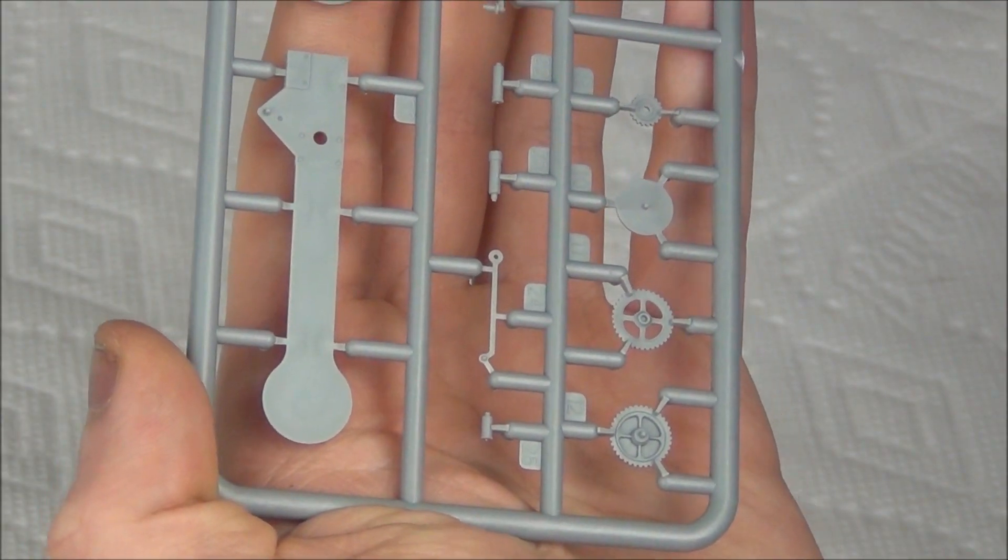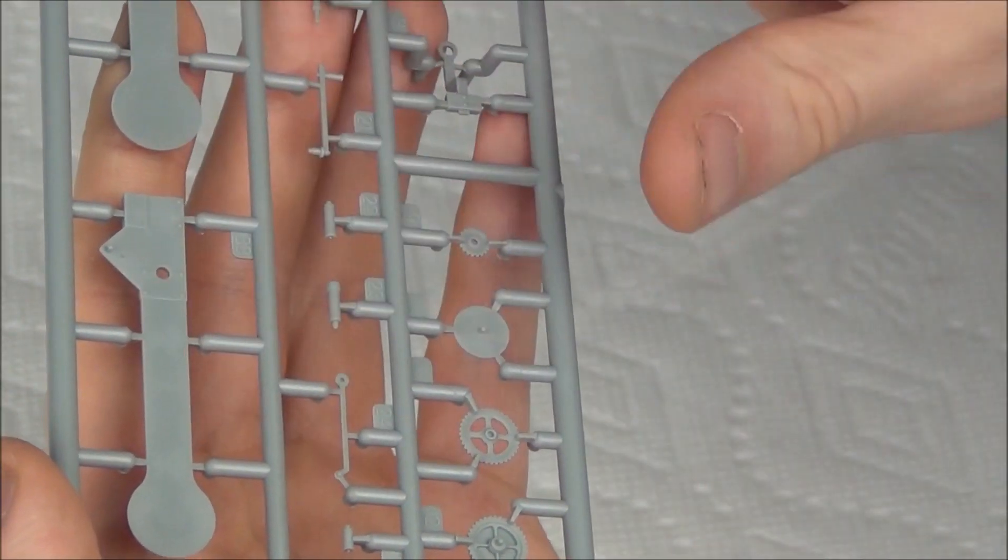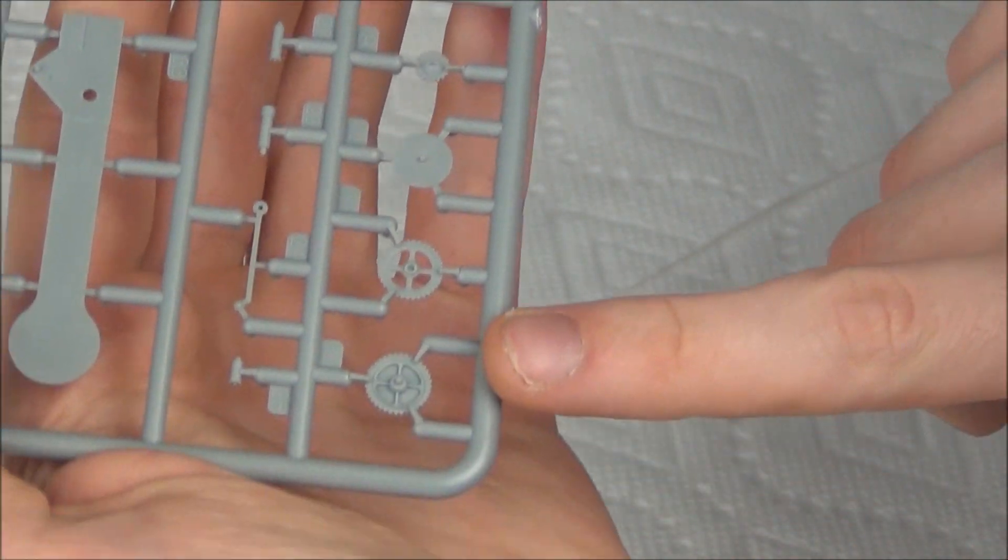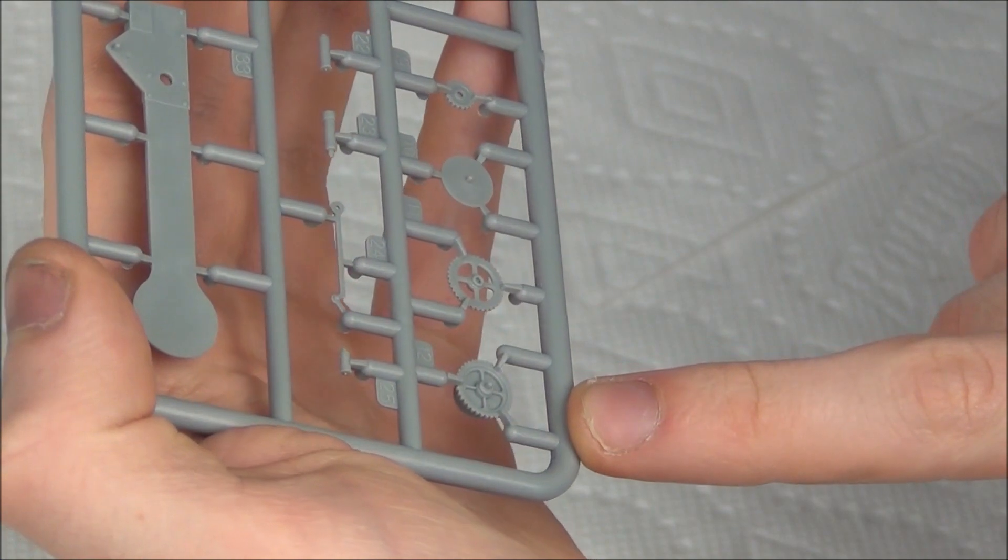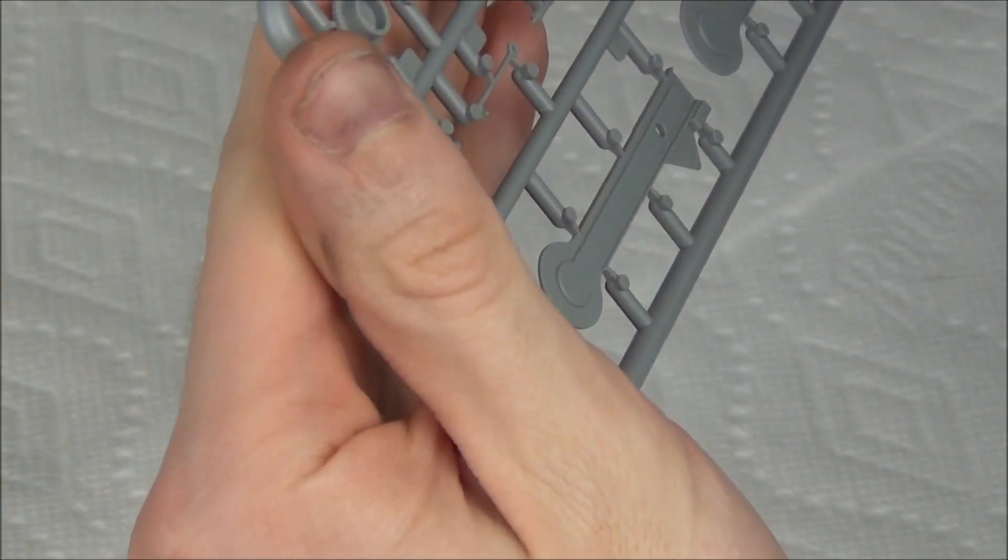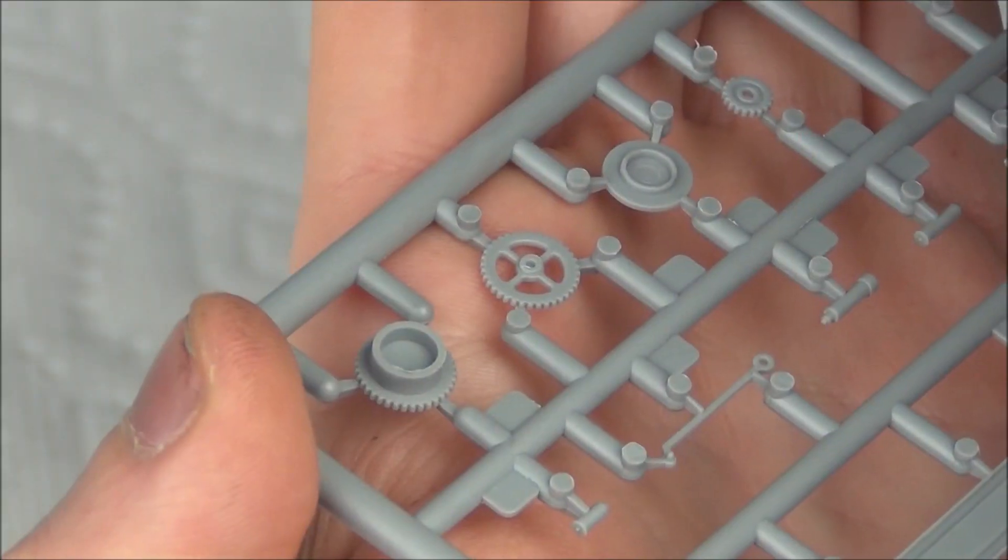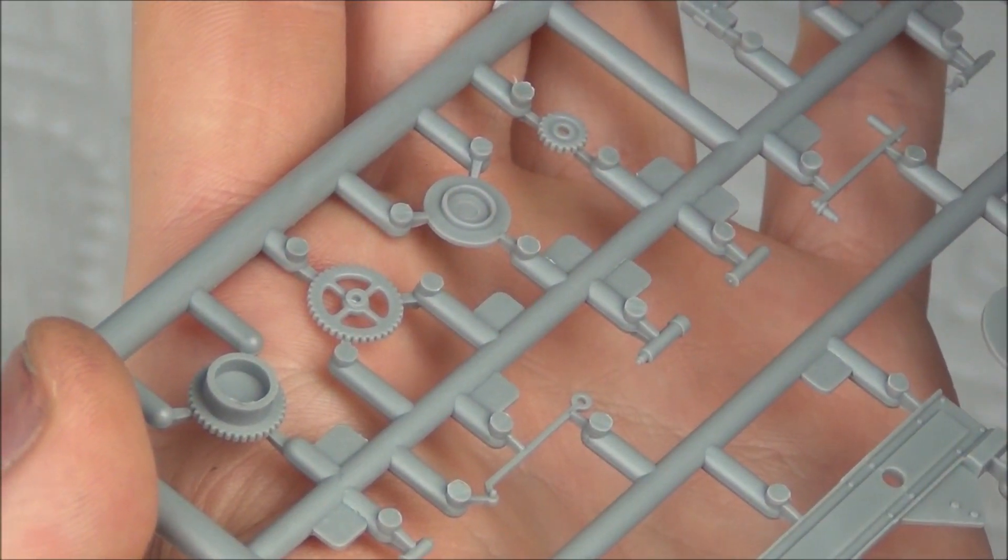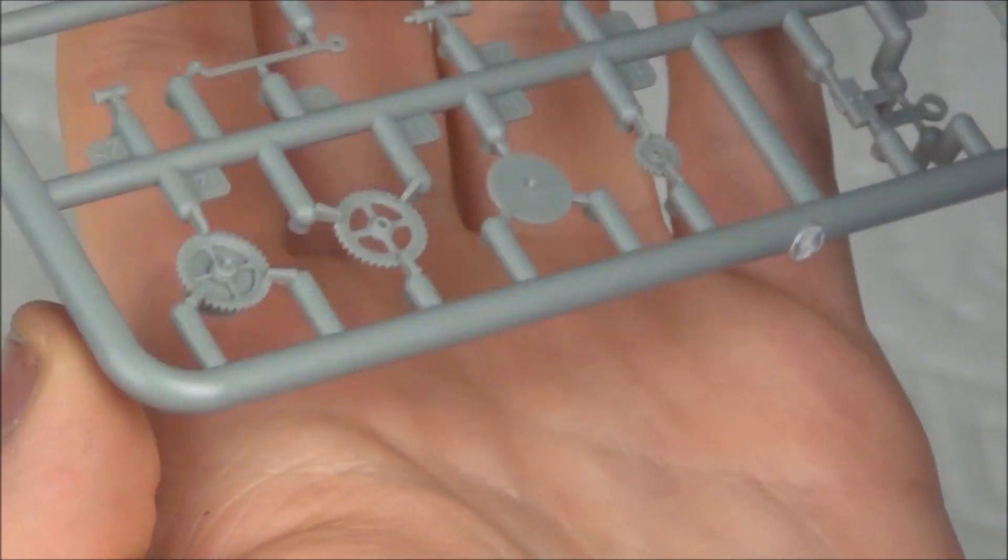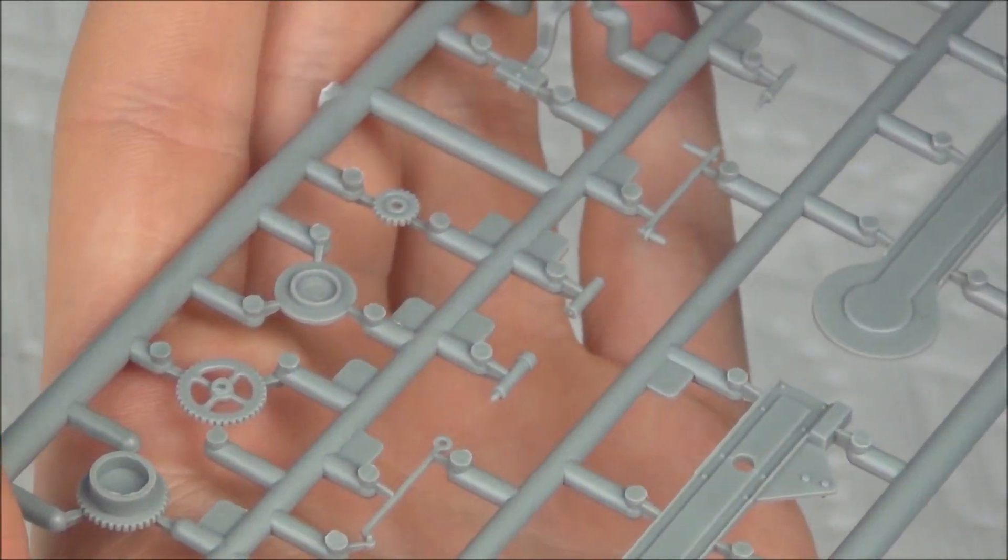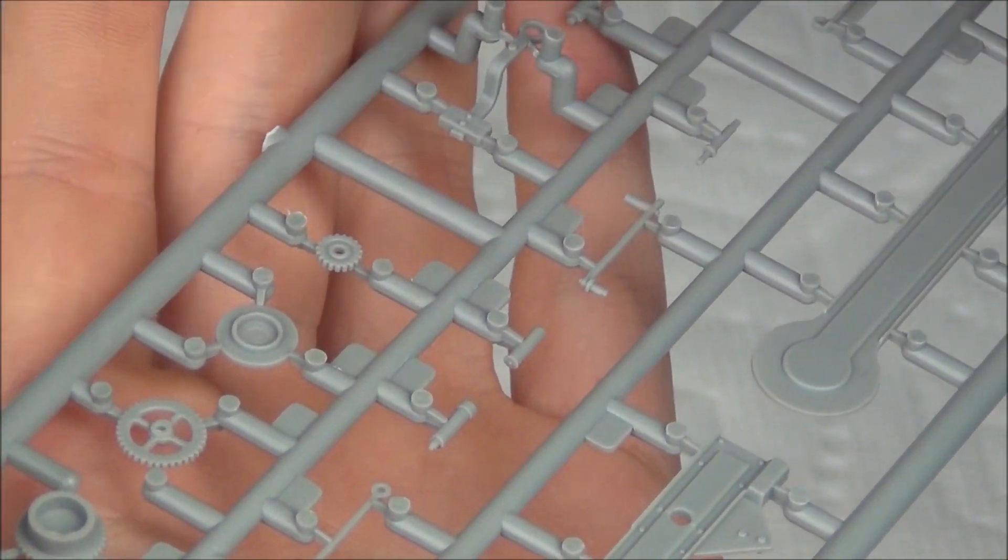On this sprue we also have some more parts of the signal, mainly the signal arms and the mechanism. We have a bunch of little gears and things like that over here that look very nicely molded. I like how they've actually had the sprue gates offset. As you can see, the sprue gates are attached to the side of it instead of at the gear itself. That way you will not lose the actual molded teeth detail. So that's actually pretty cool.